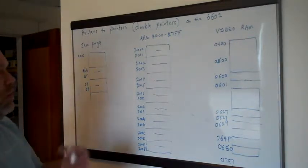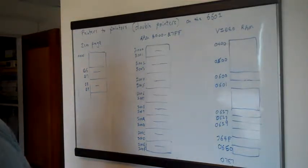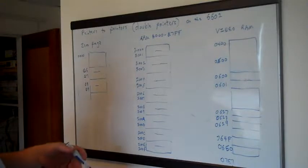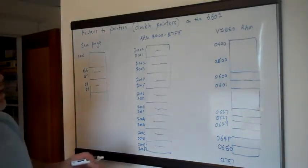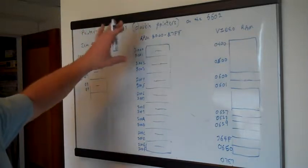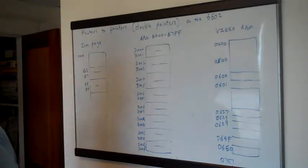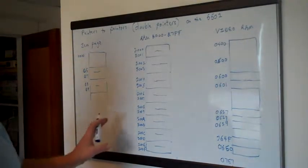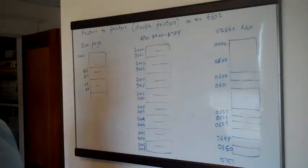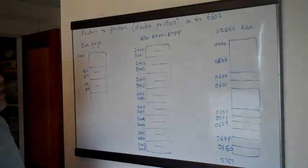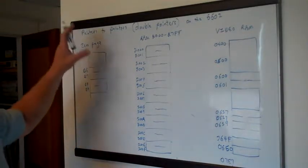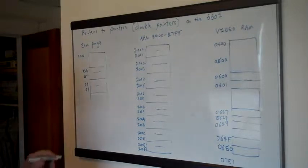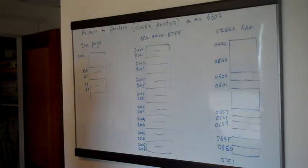I'm doing this as sort of an extension of the last coding video I did — the worm video part three. As I was working on it I realized we needed to do pointers to pointers, which wasn't something I expected to get into. I didn't think my explanation in code was necessarily very clear, so I thought it might help to draw it out on the whiteboard here. Pointers are kind of a tough concept, although I think they're actually easier in assembly than in a higher level language like C.